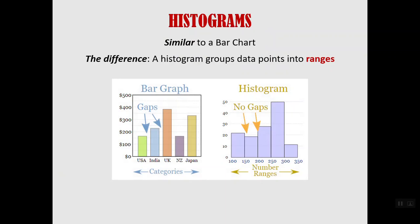You can see the bar chart has individual categories like the USA and India and there are gaps between each bar, whereas a histogram has number ranges rather than categories and there are no gaps between each bar.